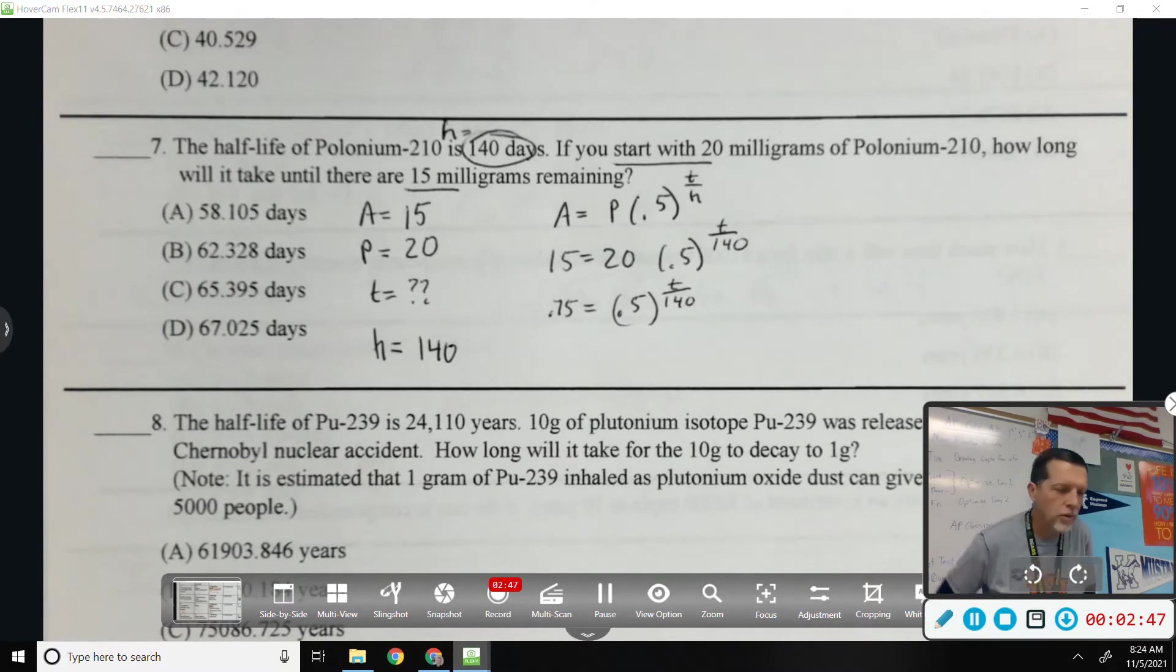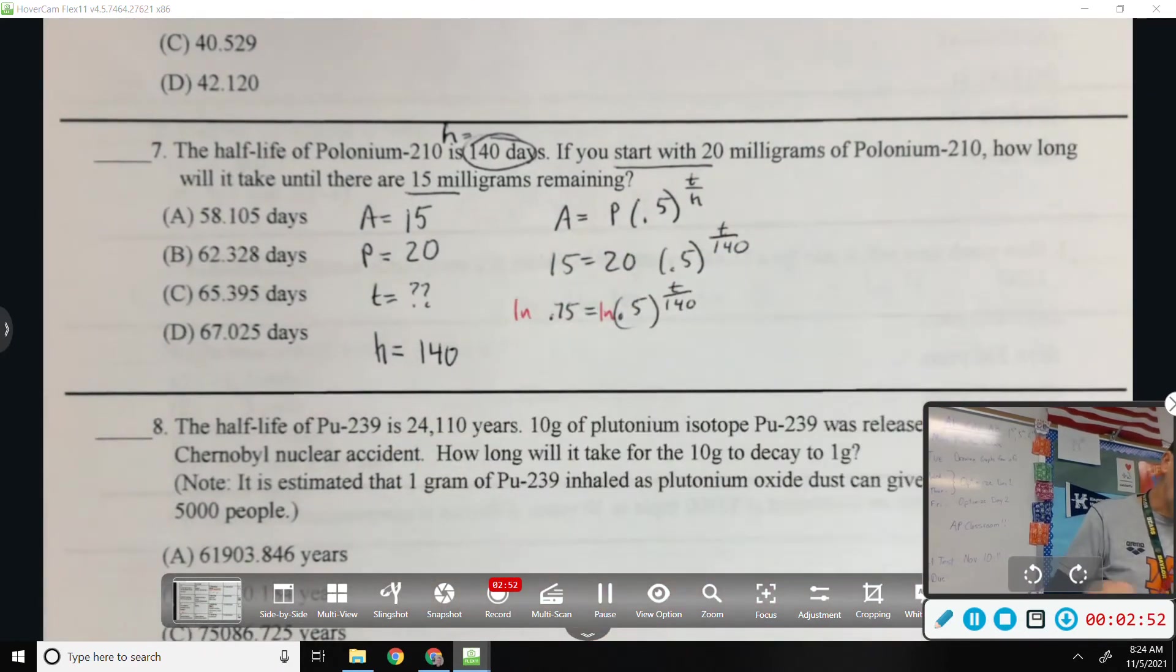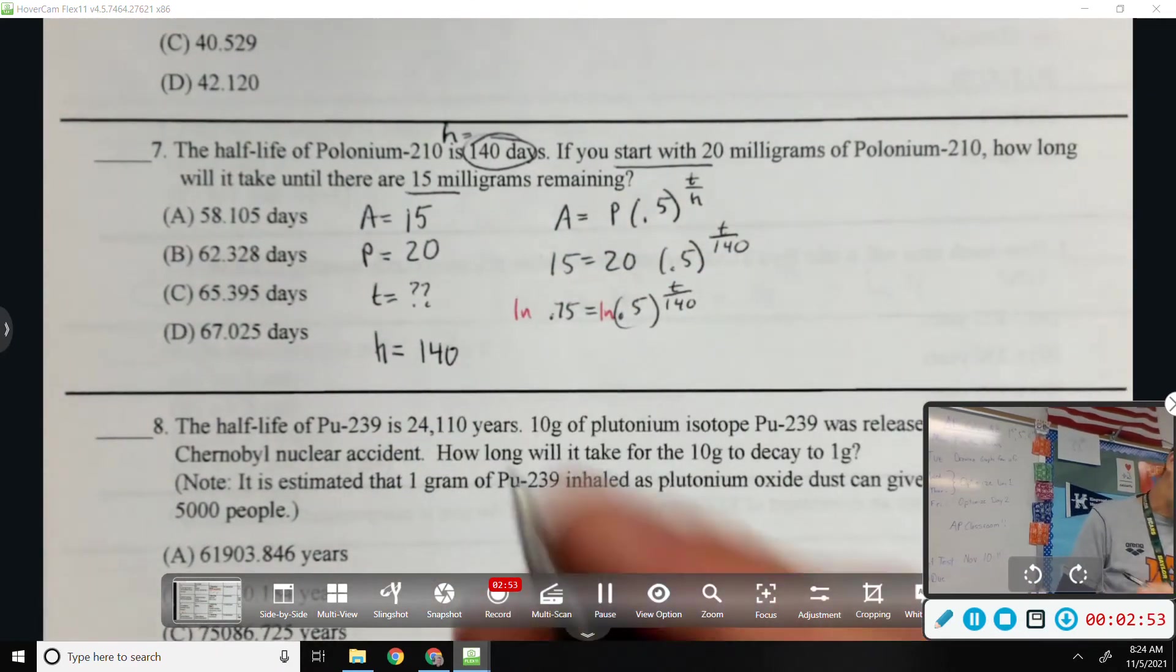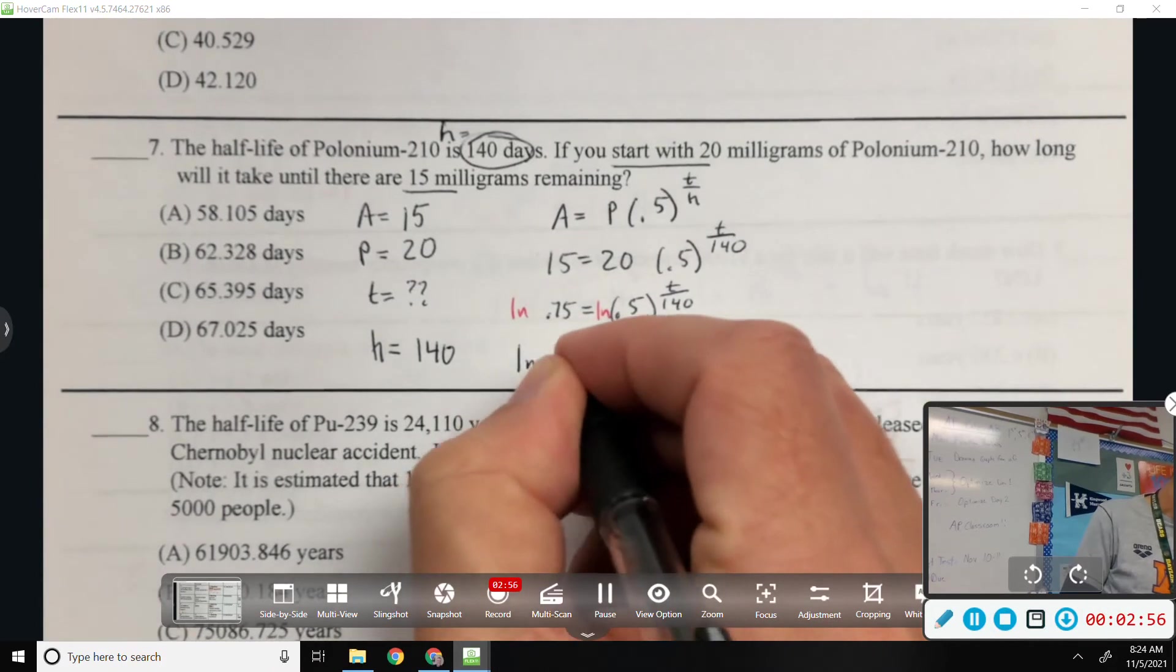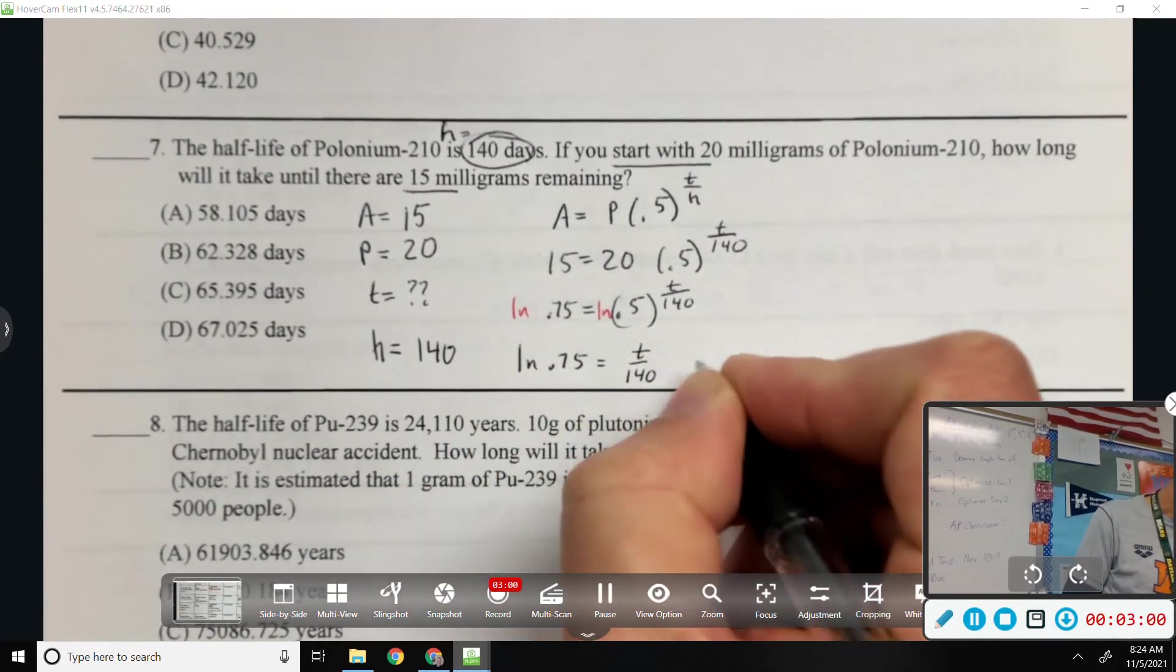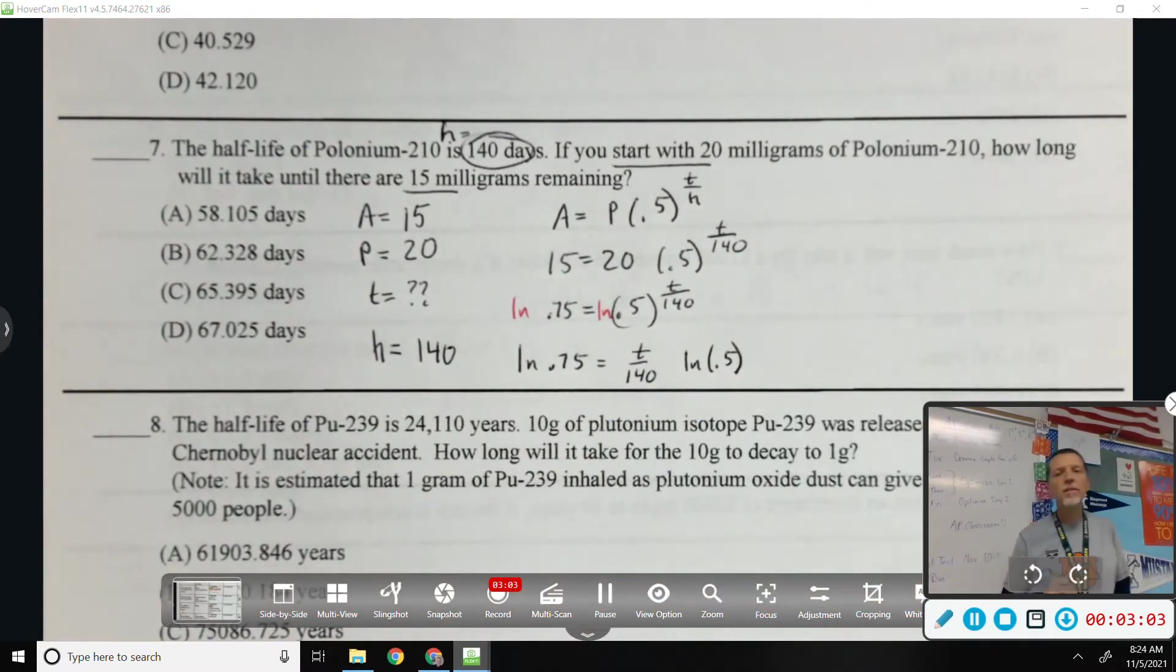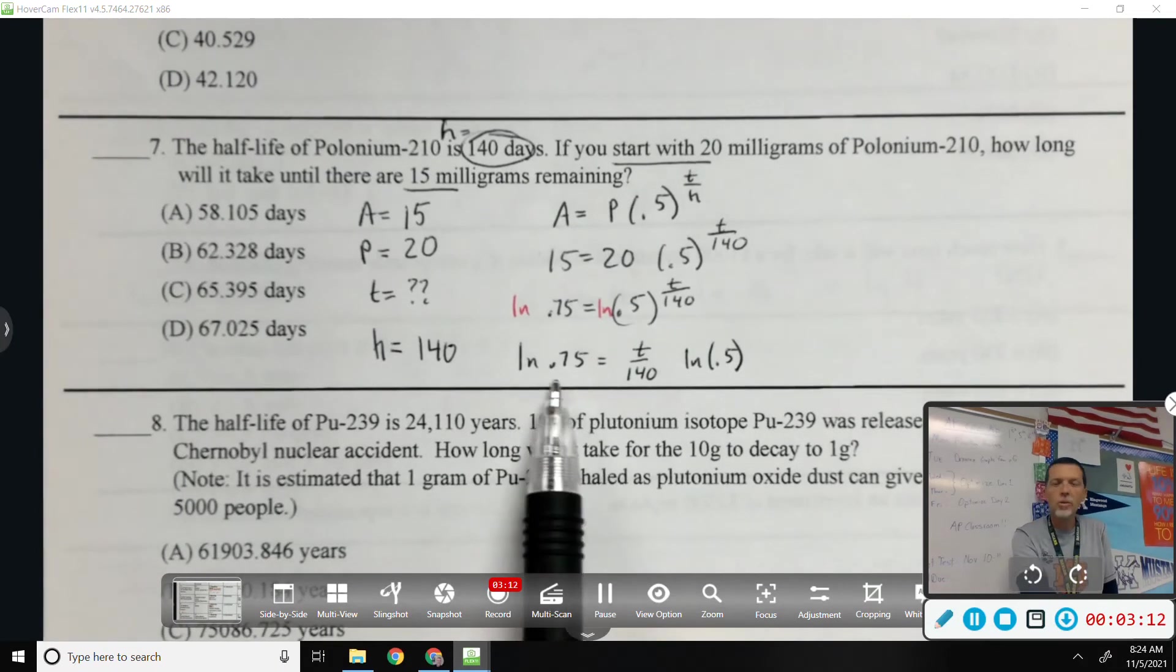Yes, that's ln both sides. Why do we want to natural log both sides? Get rid of the top thingy. That's basically correct. T over 140, natural log of 0.5. That's the key step because this is no longer an exponent equation. This is like an algebra 1 equation with weird numbers.